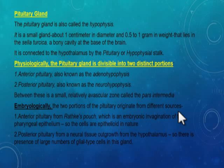Physiologically, the pituitary gland is divided into two distinct portions: the anterior pituitary, also known as the adenohypophysis, and the posterior pituitary, also known as the neurohypophysis. In between these two portions there is a small avascular zone called the pars intermedia.